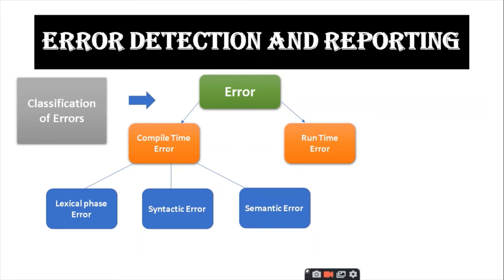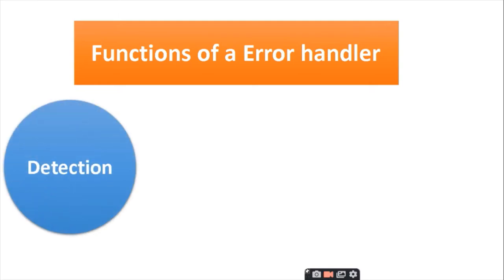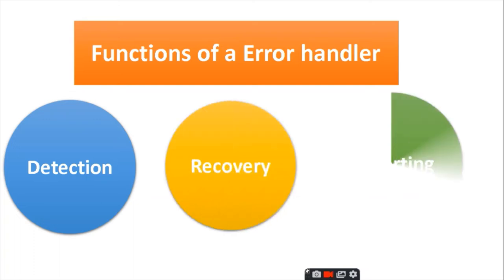What is compile time error? It is an error that occurs when a program is compiled. What is run time error? A run time error refers to an error that takes place while executing a program. Compile time errors have three subtypes: lexical phase error, syntactic error, and semantic errors. A lexical phase error occurs when a sequence of characters does not match the pattern of any token. A syntactic error is an error in the syntax of code introduced by a programmer.